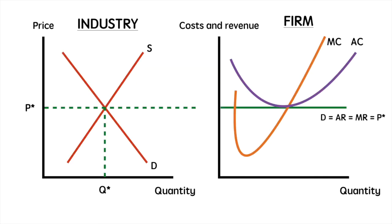Let's start with our diagram in long run equilibrium. Assume now that there is a sudden increase in the demand for widgets. This shifts the industry demand for widgets to the right, resulting in a higher equilibrium price of P1 and higher equilibrium quantity of Q1.